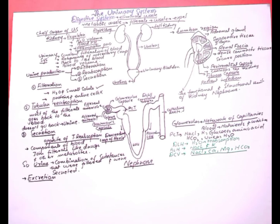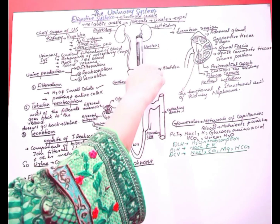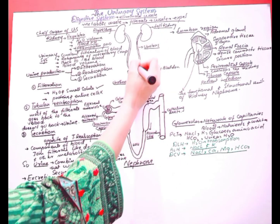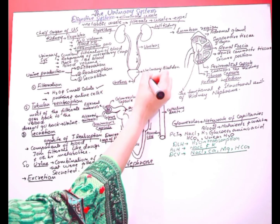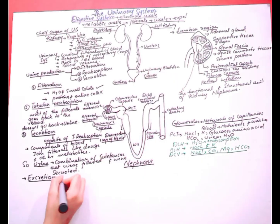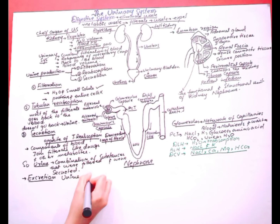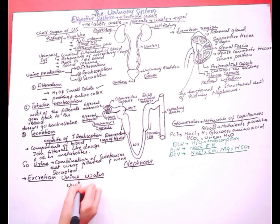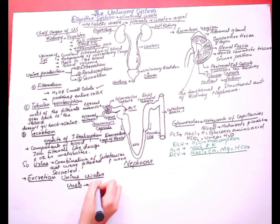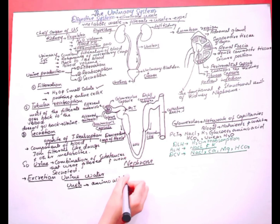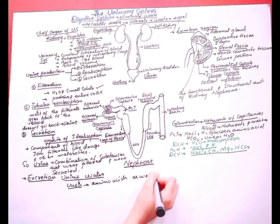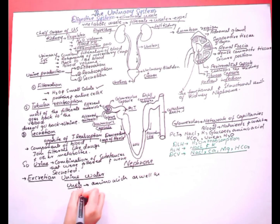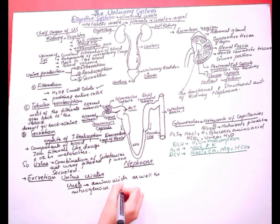Once the urine is formed within the kidney, it is transferred through cylindrical structures called ureters into the bladder. The bladder stores the urine. Urine contains water and is made up of lots of urea, which is the result of the breakdown of amino acids, as well as nitrogenous waste like uric acid and creatinine.